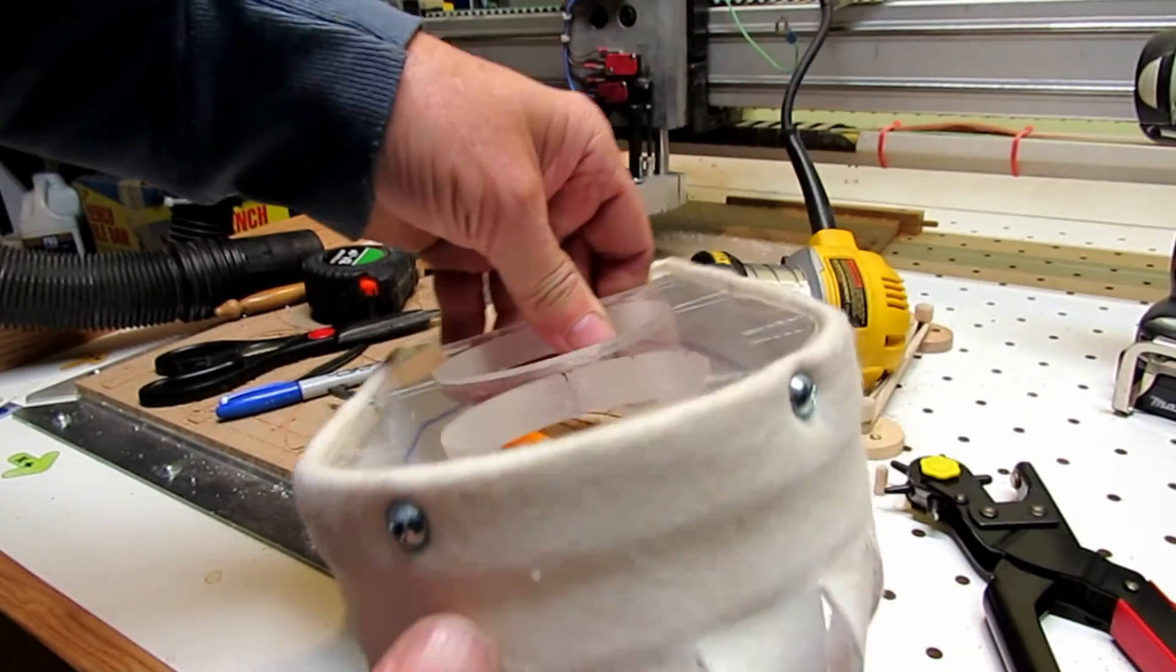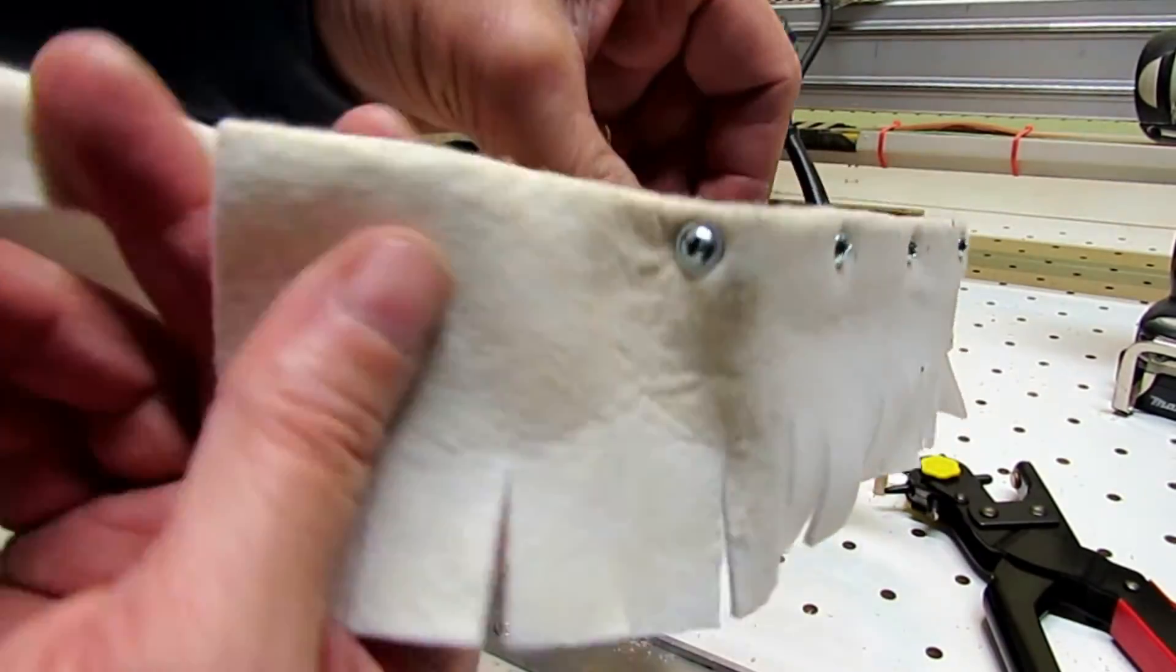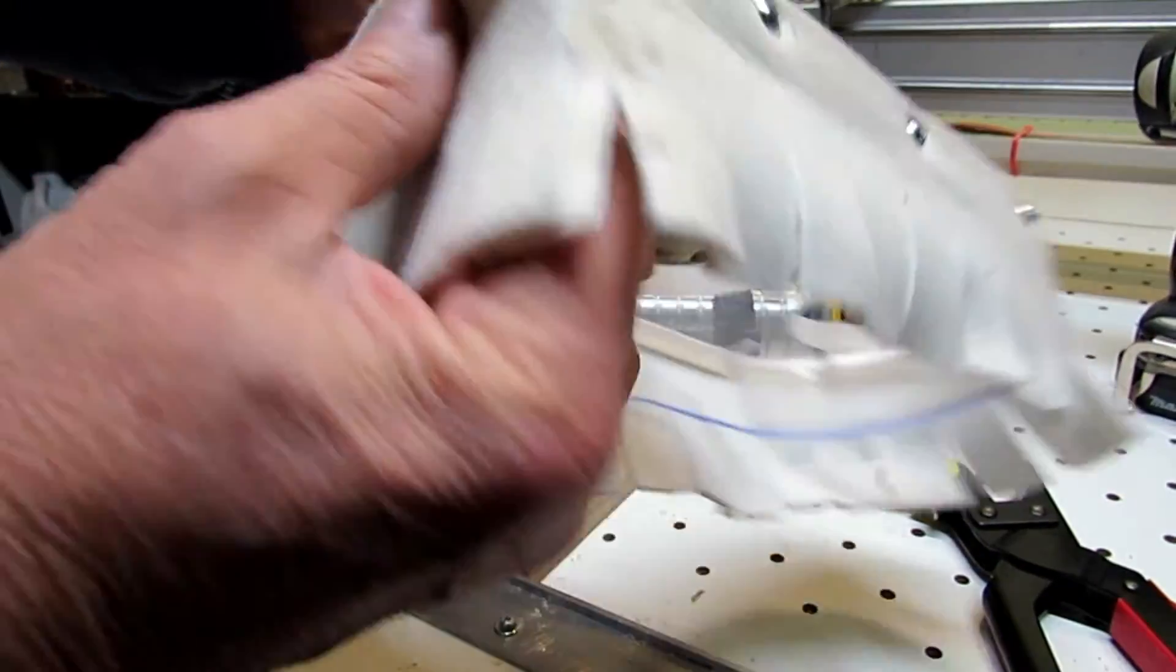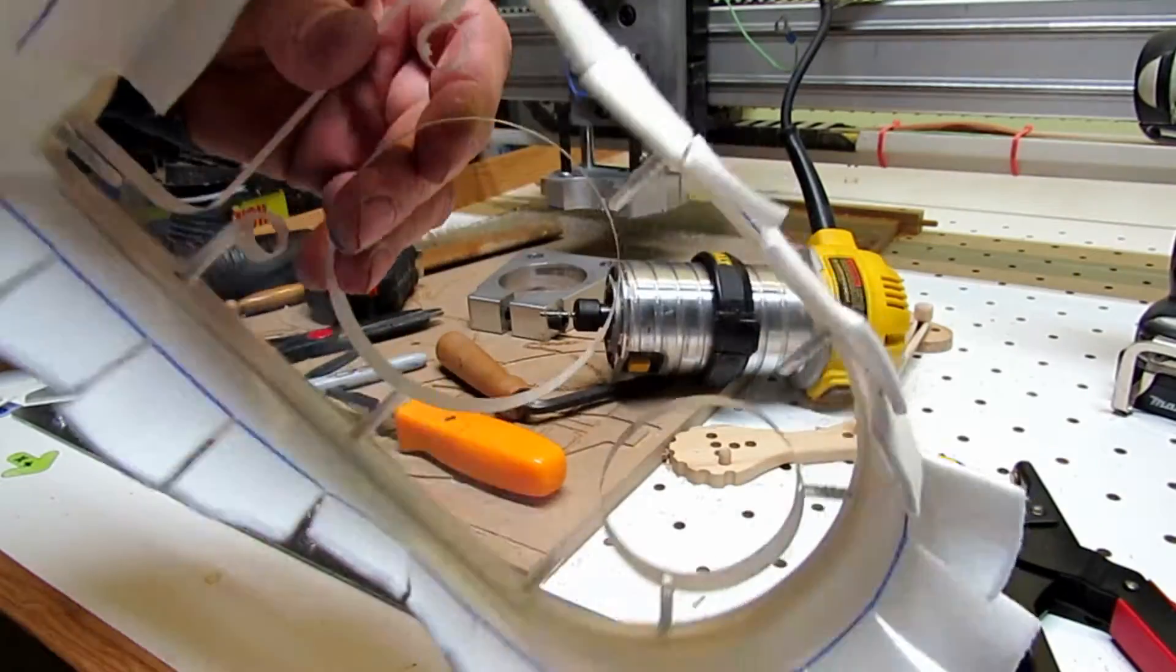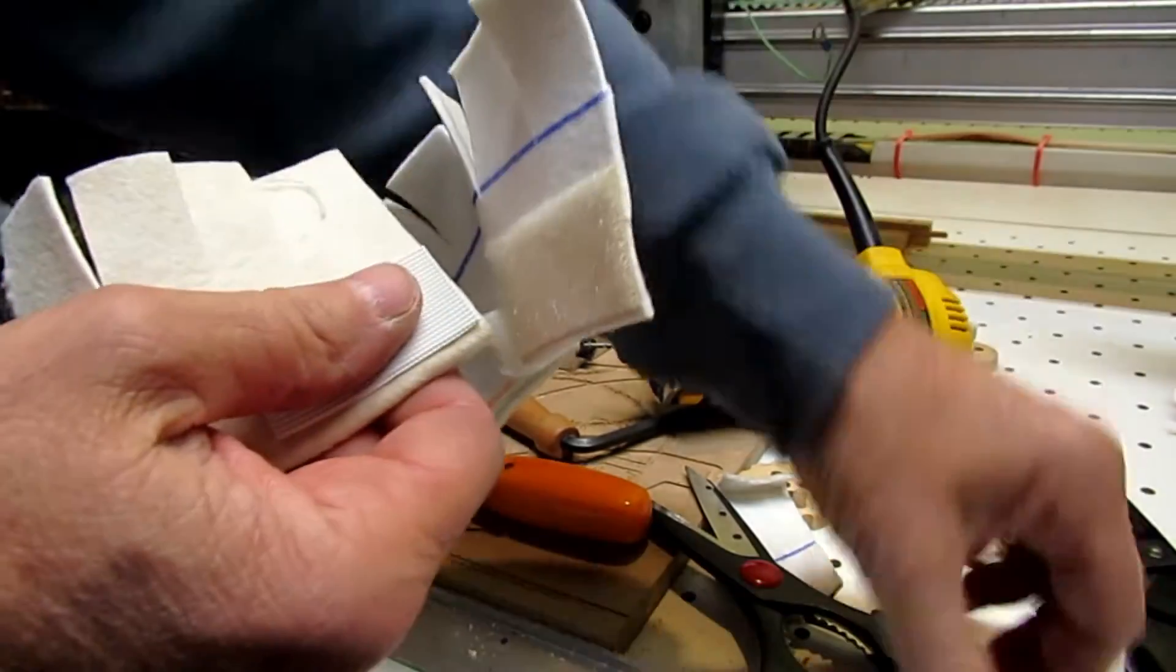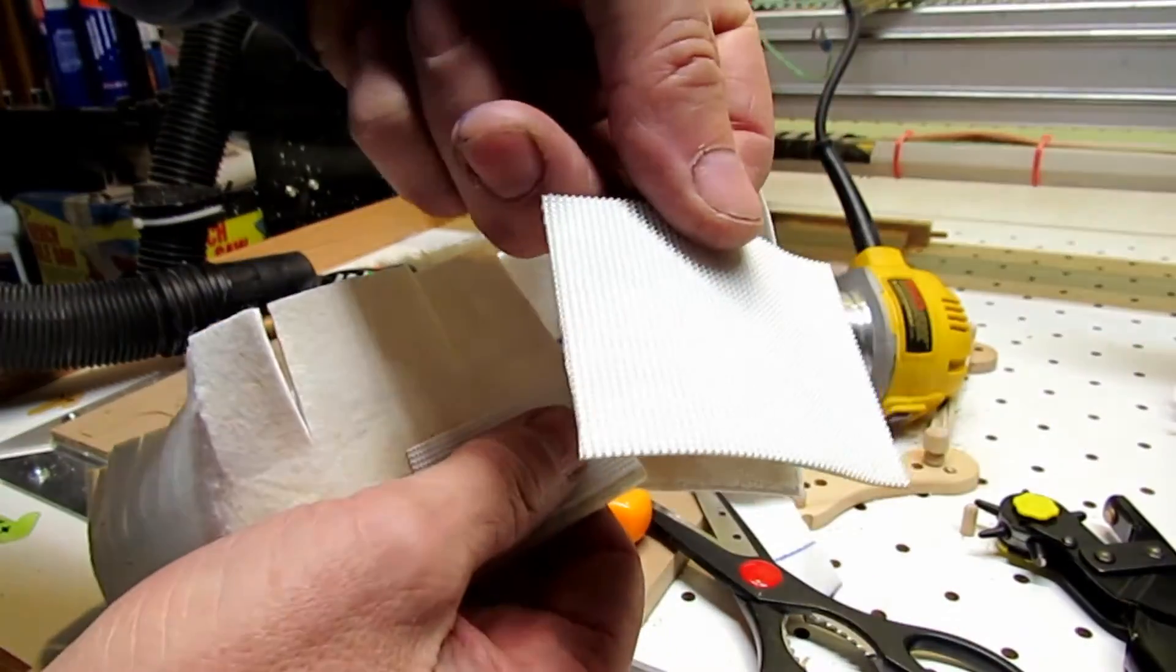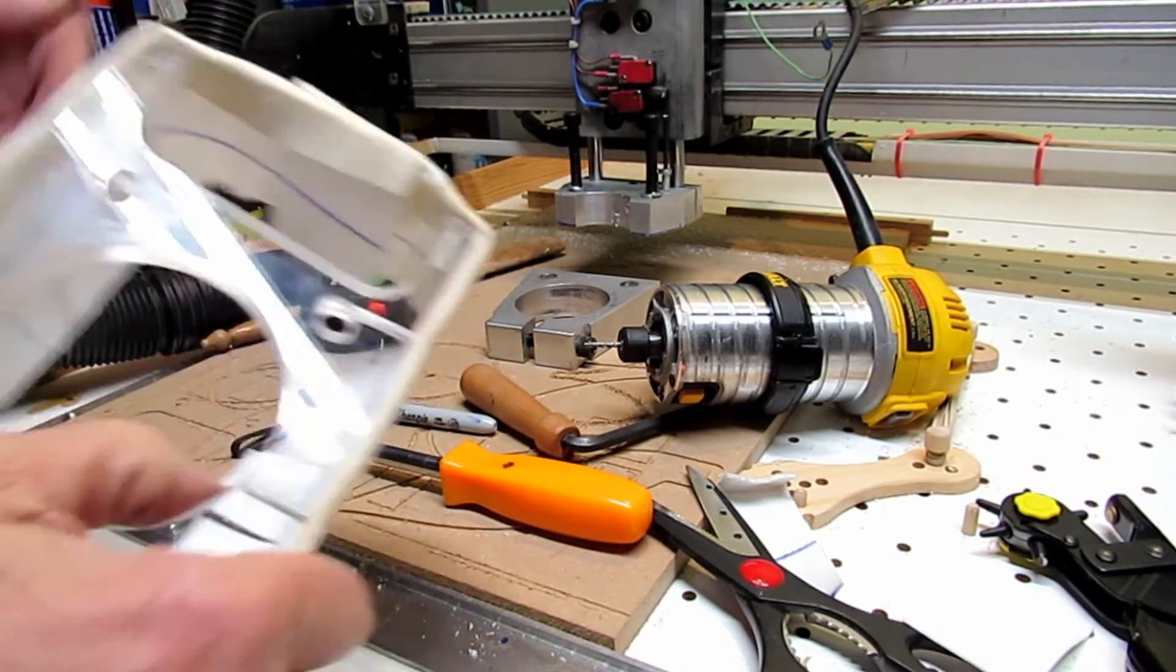So everything fit together nice, and I was real happy with the way it came out. Now on the back of it, I've got to be able to open and close the flap to get it in place easily. So what I wound up doing there was just, I had some self-adhesive Velcro that I put in there so I could just use the Velcro to lock it in place once everything was mounted.